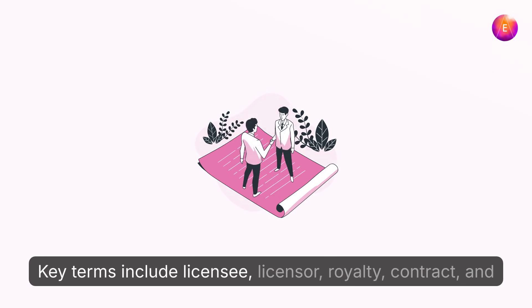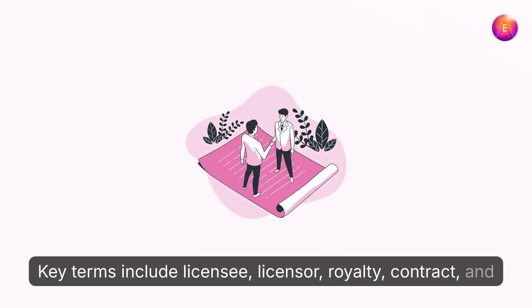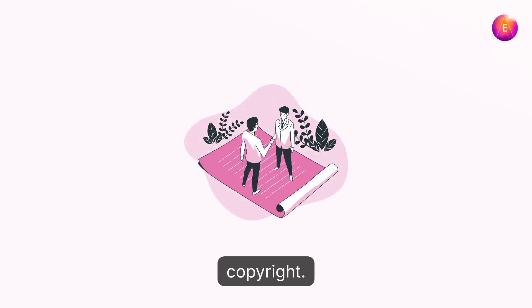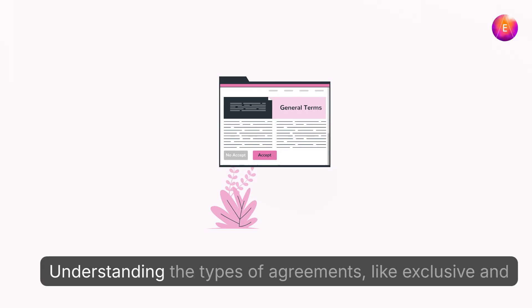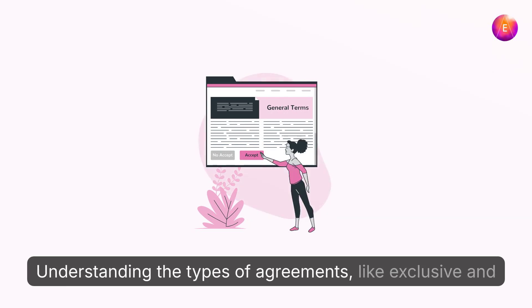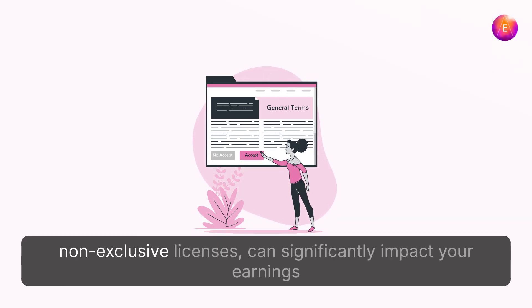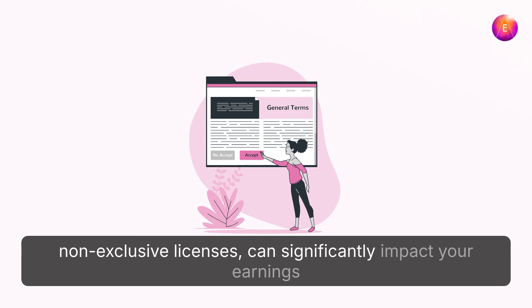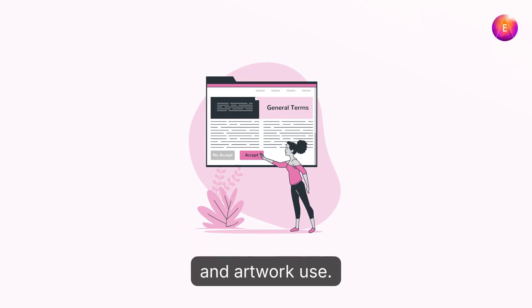Key terms include licensee, licensor, royalty, contract, and copyright. Understanding the types of agreements, like exclusive and non-exclusive licenses, can significantly impact your earnings and artwork use.